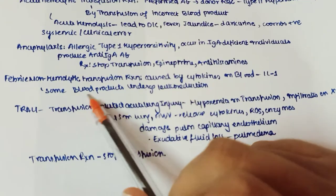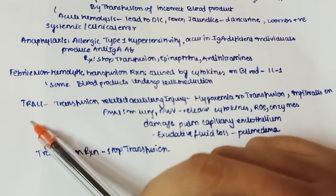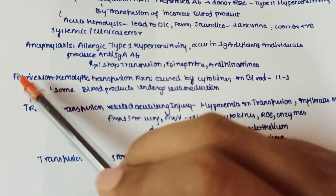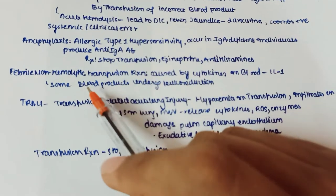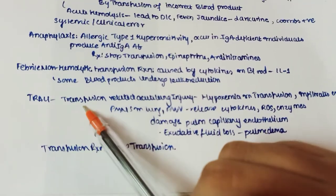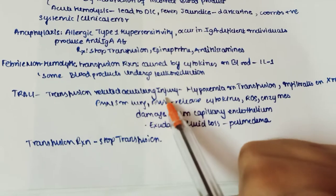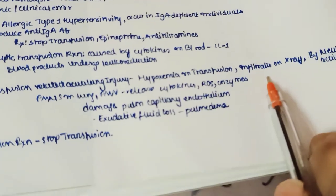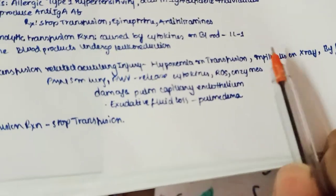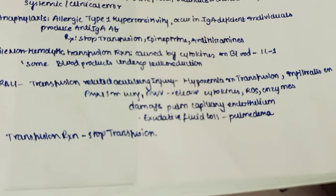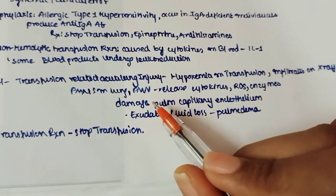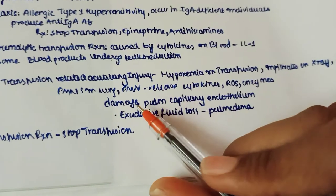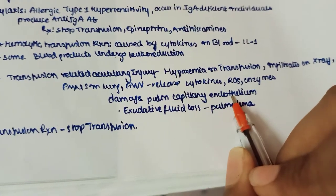Febrile non-hemolytic transfusion reaction is caused by cytokines in blood products, such as interleukin-1. Some blood products undergo leukoreduction. There is no hemolysis — just fever from cytokines. TRALI (transfusion-related acute lung injury) involves hypoxemia and pulmonary infiltrates on X-ray due to neutrophil activation.